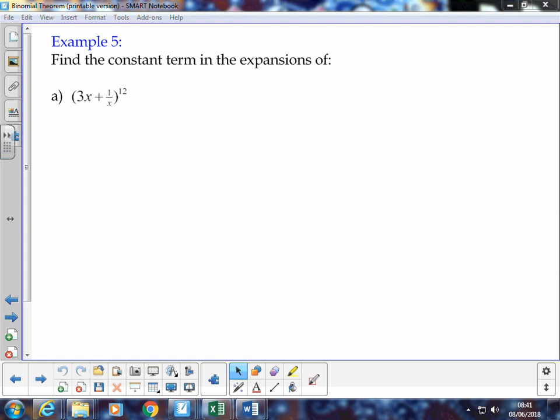This example here is exactly the same format, exactly the same strategy. It just reads slightly different. It says find the constant term in the expansions of. And we've known from when we were doing our full expansions, that sometimes in the middle of the expansion there is a term without an x or a variable beside it. It's just a constant term. What we're really just doing in this question is we're going to try and find that.